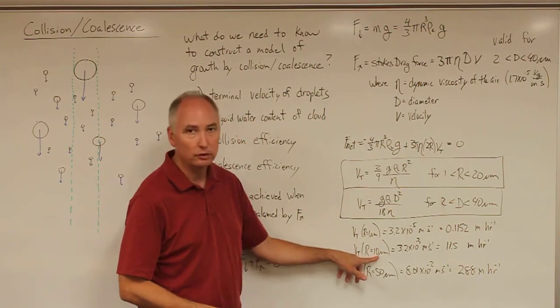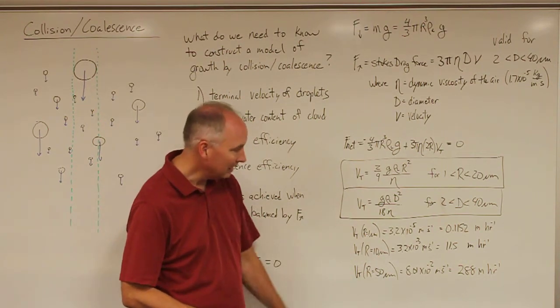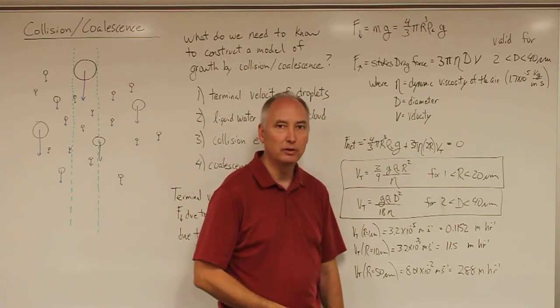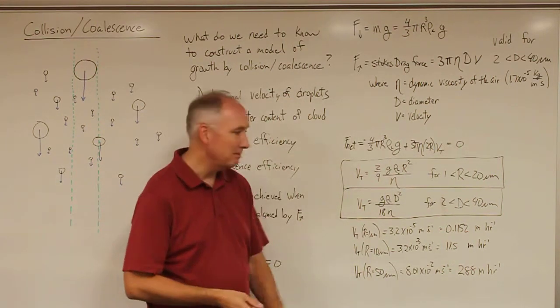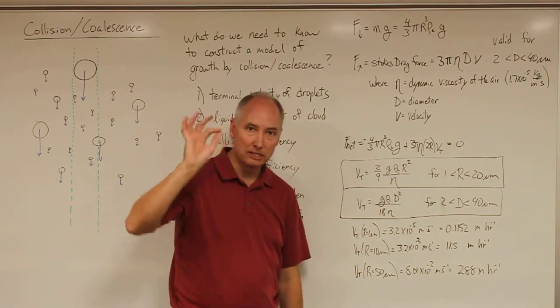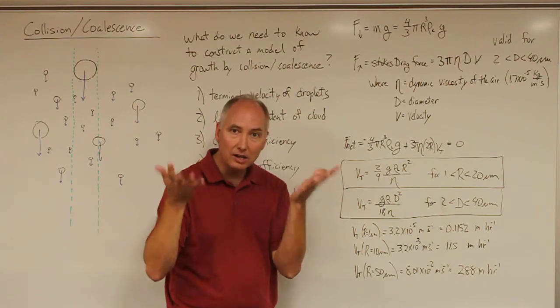If you move up to a 10 micrometer radius droplet, it will fall about 11.5 meters in 1 hour. So once again, 10 micrometer droplets are going to remain suspended in the atmosphere and they're not going to fall out of the cloud at any significant velocity.